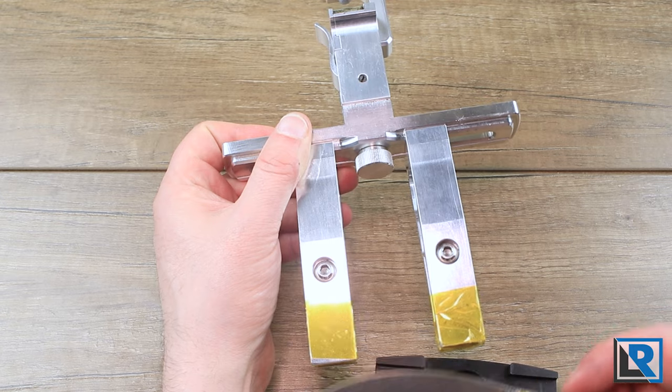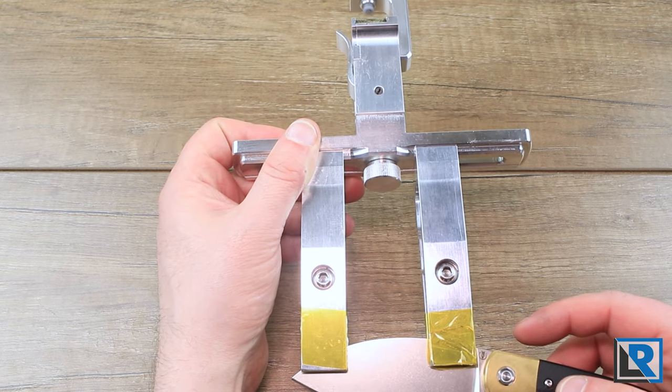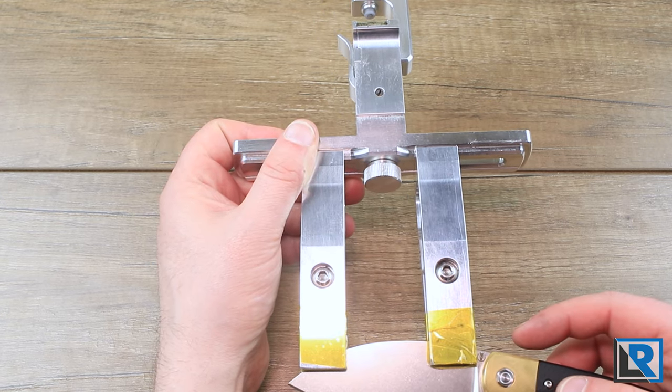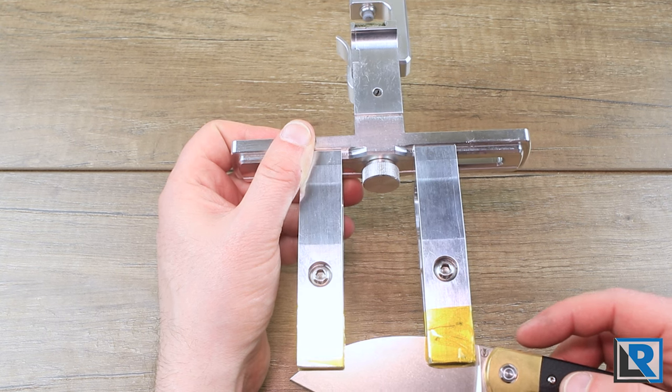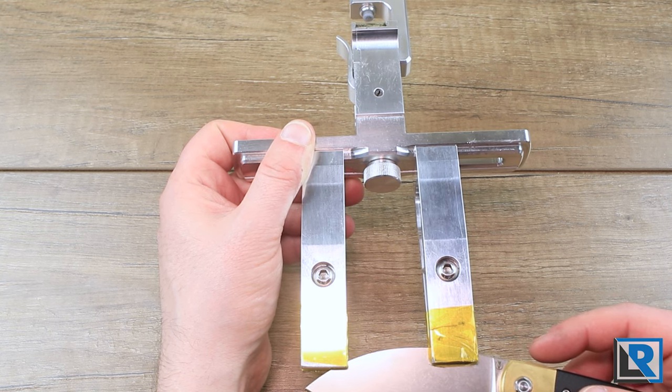I've got a three and a half inch knife blade here. This is a Vosteed Nightshade and you can see it does fit in there. But ideally you'd like those clamps to be a little bit closer together. And this adapter will allow you to do that.